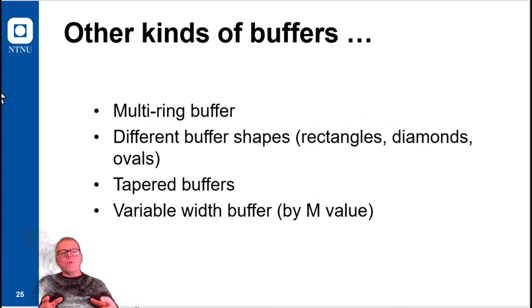So I've gone through now the major kinds of buffers on points, lines, and polygons, but there are other kinds of buffer and some of them really cool. We have multi-ring buffer, we have different buffer shapes that you can create, and we have what is called tapered buffers and variable width buffers.